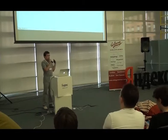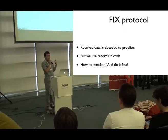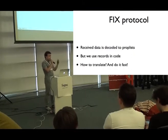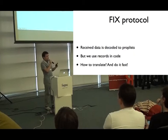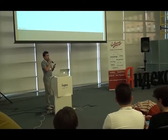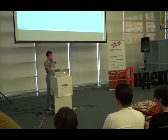When we receive a FIX message, we translate it to a prop list. But it is a problem because prop lists are not convenient to use in your code. You can't use prop lists in function clauses or in case statements — you always have to call get value, which is very inconvenient. So we work with records in code, and we need to translate these prop lists to records, fast and conveniently.